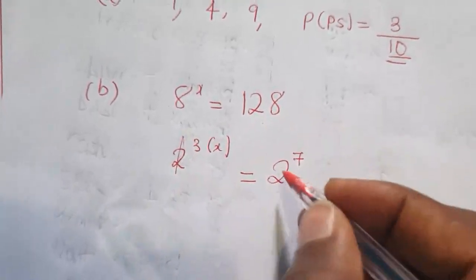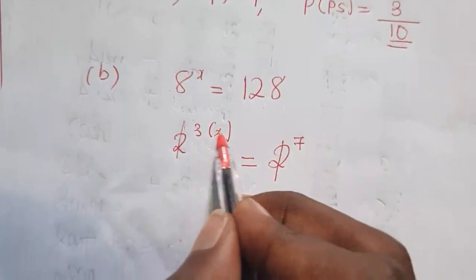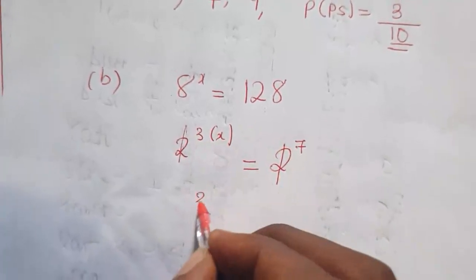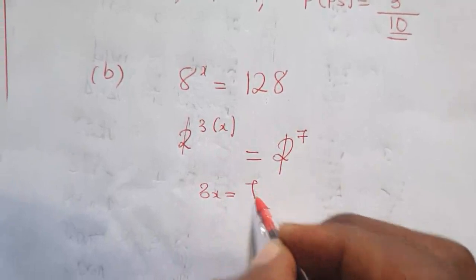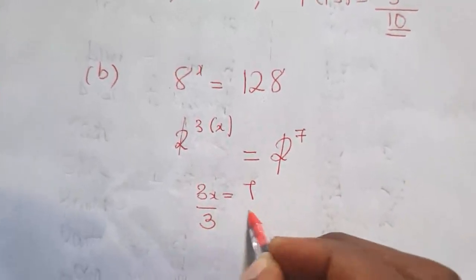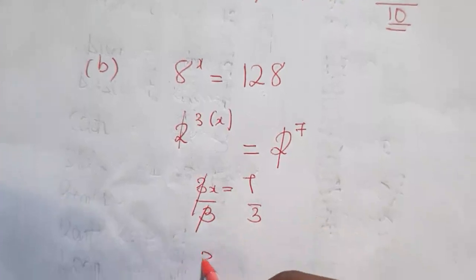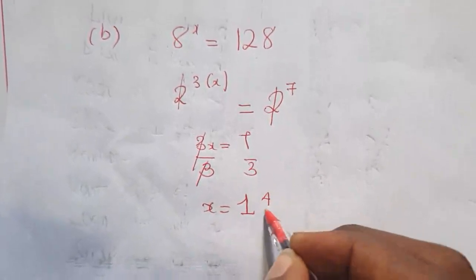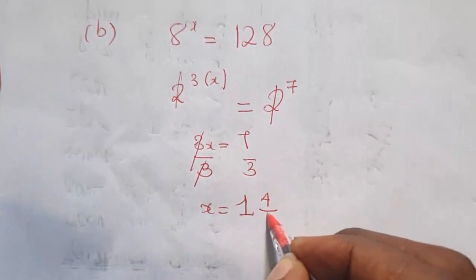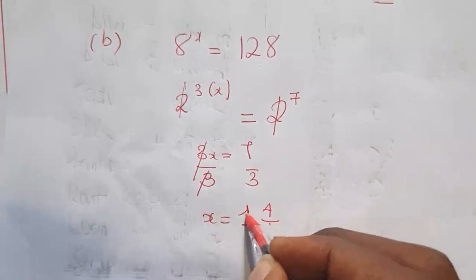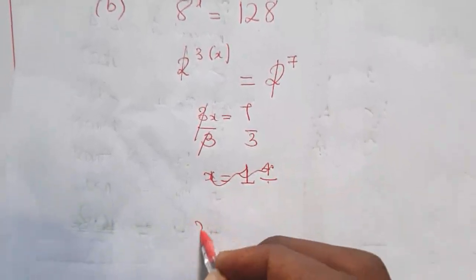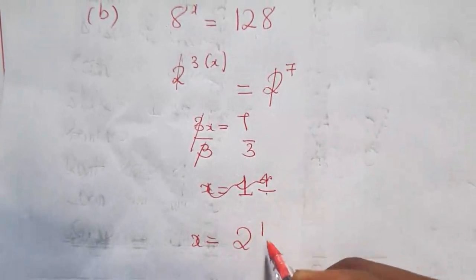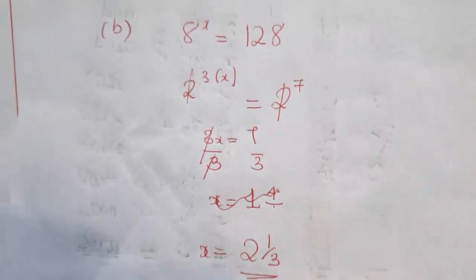So now we can eliminate the similar bases. Remember, this power is being multiplied there. So we're going to have 3x equal to 7. So over 3, over 3. So x is therefore equal to, sorry, x equal to 2 and 1 over 3. That's the answer.